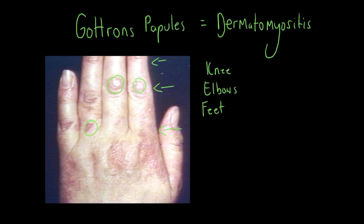They're usually made worse by exposure to sunlight and can become itchy and bleed, so it's a good idea for people with Dermatomyositis to avoid direct exposure to sunlight.